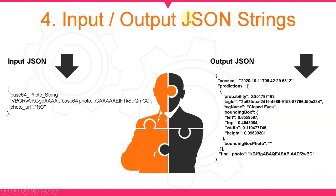Input and output JSON strings. On the left side you have the input JSON string — the input photo may be as a base64 encoded string or a URL from the web. On the right side you have the output JSON string with multiple fields; the most important is the final photo upon which bounding boxes of detected human closed eyes are drawn. The detection is made with a certain probability score as you see here.